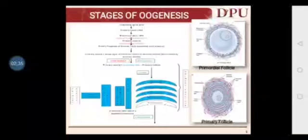To recap: in the fetal stage, primordial germ cells from the yolk sac reached the ovary and divided mitotically to produce millions of primary oocytes. These primary oocytes entered meiosis 1, but meiosis 1 was not completed — only prophase 1 of meiosis 1 occurred before puberty. Until puberty, the primary oocyte is surrounded by a single layer of follicular cells, and together they are called the primordial follicle.